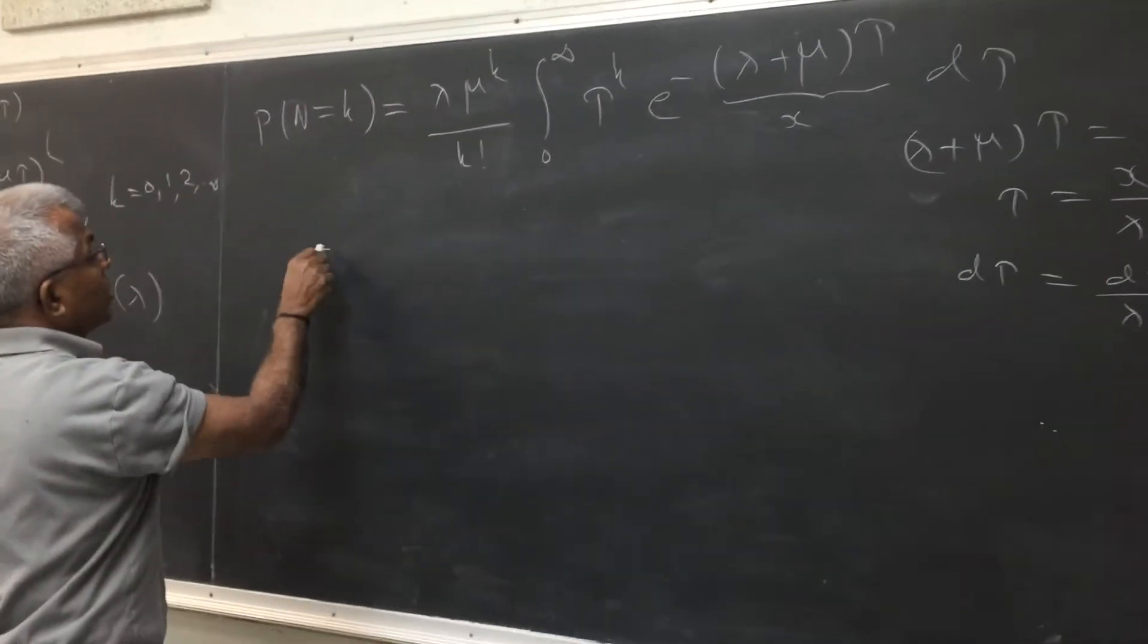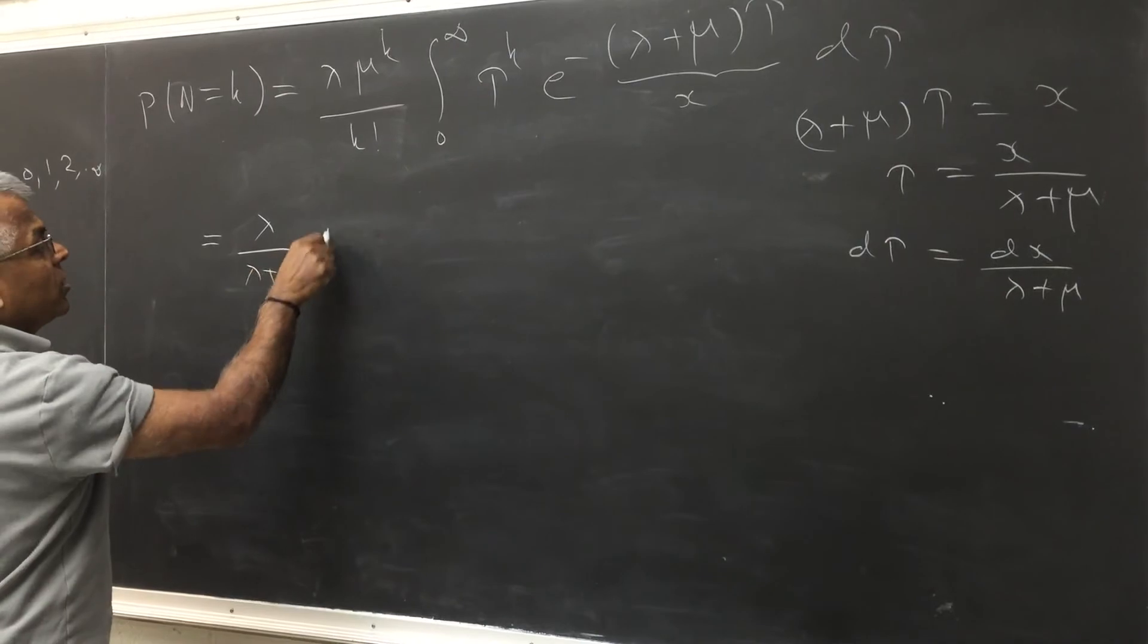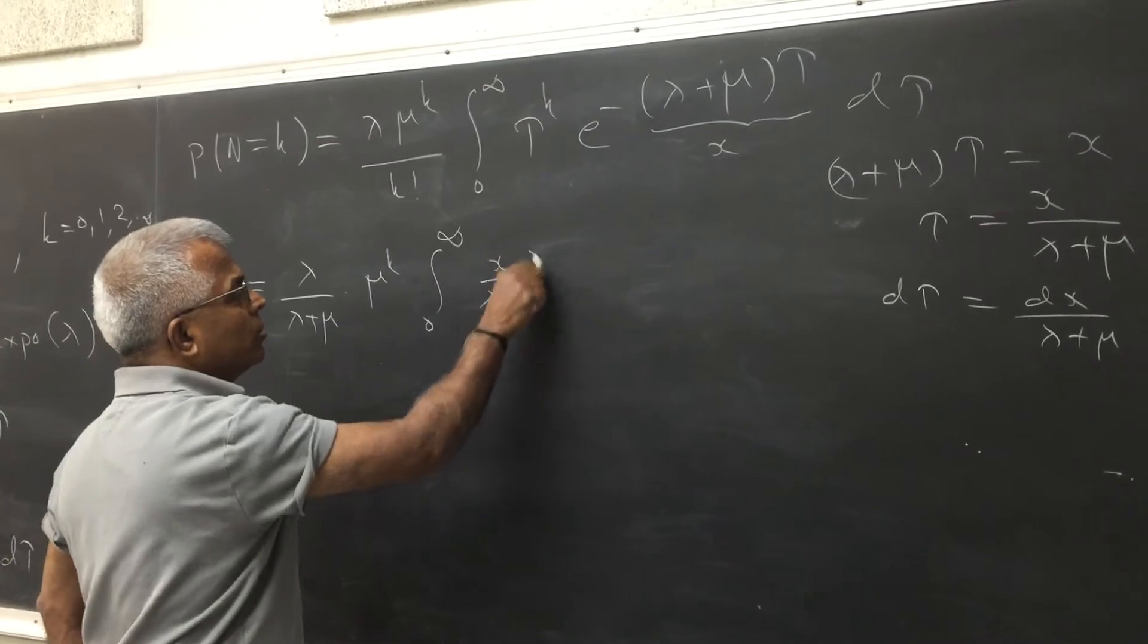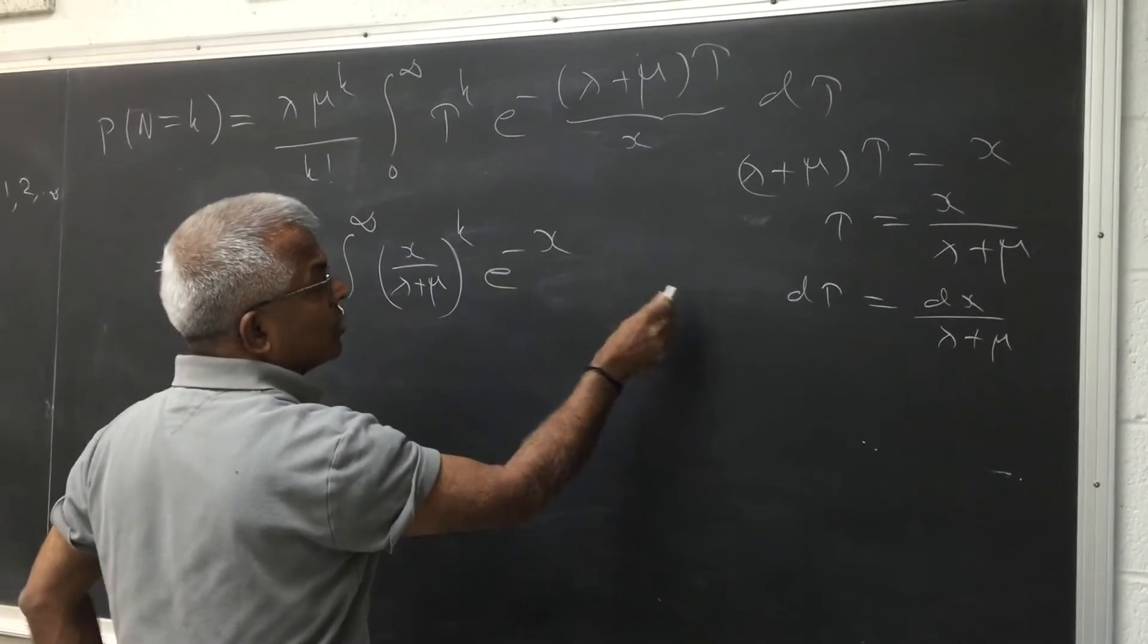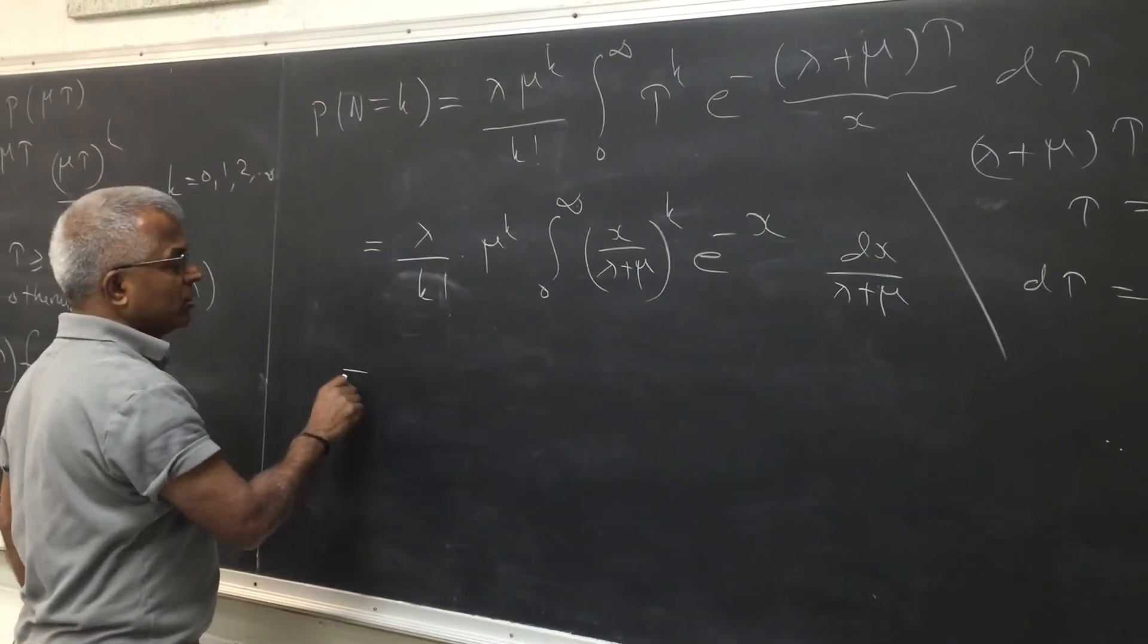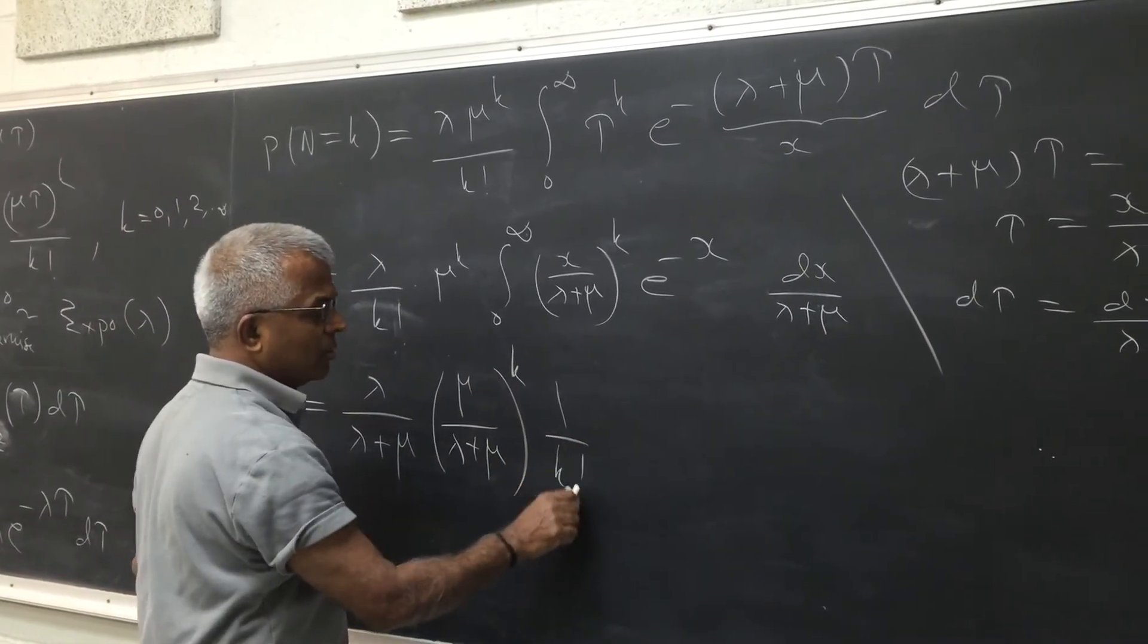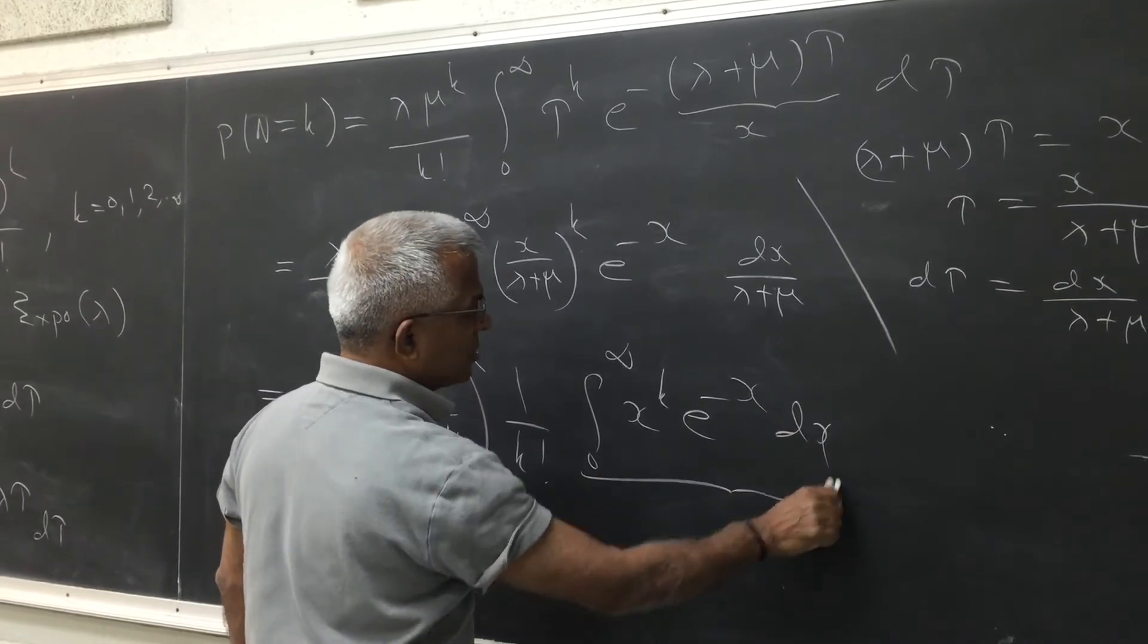So if I substitute it here, this becomes lambda over lambda plus mu. And this you have mu to the power k integral 0 to infinity. So the limits remain the same. So tau is of course x over lambda plus mu to the power k e raised to minus x. And d tau is dx over lambda plus mu. So if I pull out all the constants outside, the whole thing over k factorial. So if I pull out, this is lambda over lambda plus mu. This is mu over lambda plus mu to the power k. Then you have 1 over k factorial. This is integral 0 to infinity x to the power k e raised to minus x. But this is just k factorial. So k factorial cancels.